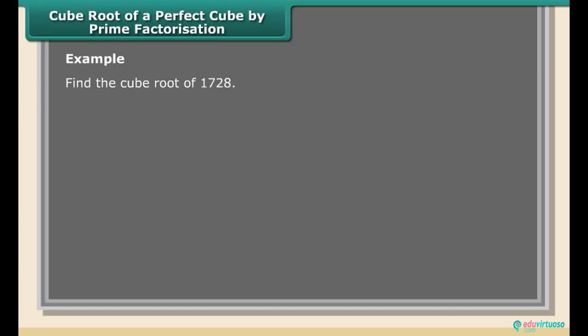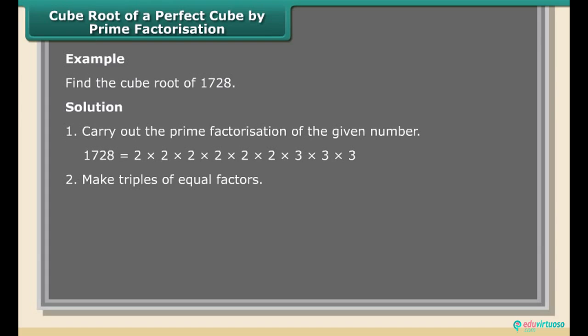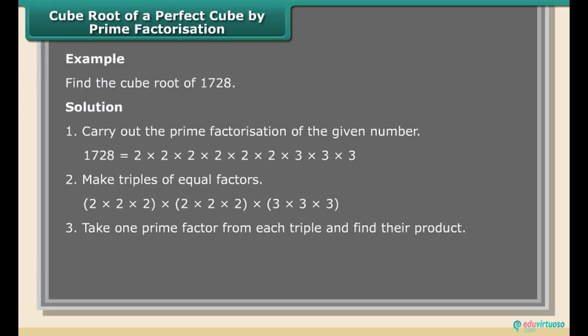Cube root of a perfect cube by prime factorization. Example: Find the cube root of 1728. Solution: Carry out the prime factorization of 1728. 1728 = 2 × 2 × 2 × 2 × 2 × 2 × 3 × 3 × 3. Take one prime factor from each triple and find their product: 2 × 2 × 3 = 12. Therefore ∛1728 = 12.